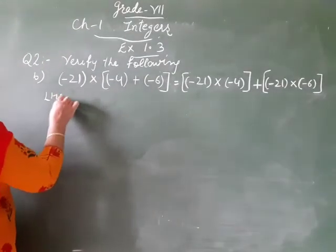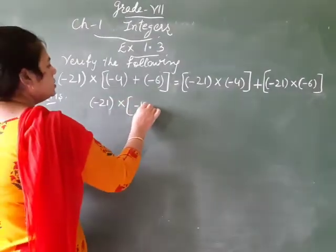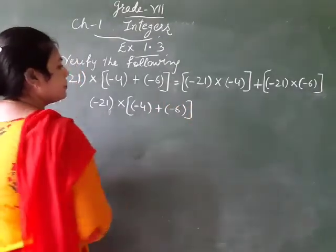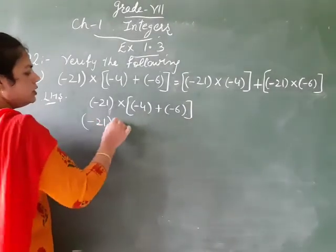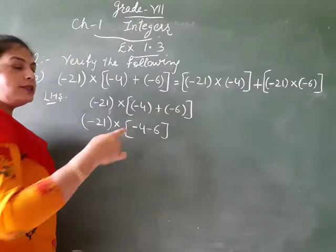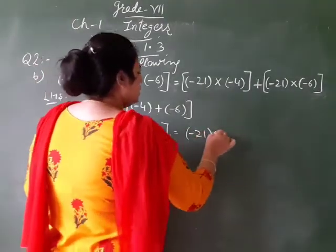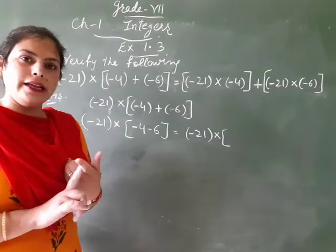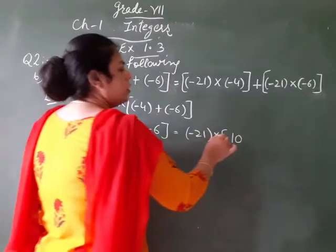So our left hand side is (-21) × [(-4) + (-6)]. So we have to solve firstly bracket: (-21) × [(-4) + (-6)]. Plus minus is minus. Is equal to (-21) × (-4 - 6). Same sign are adding. 4 plus 6 is 10, but there is negative sign, so we apply here minus.